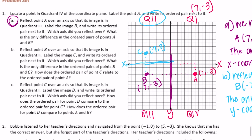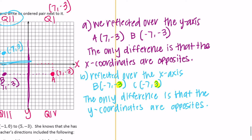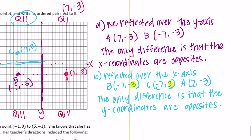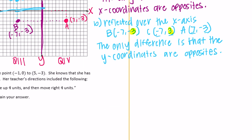The last question asks: how does the ordered pair of point C relate to the ordered pair of point A? A was (7, -3) and C is (-7, 3). Both coordinates are opposites — the x-coordinate goes from 7 to -7, and the y-coordinate goes from -3 to 3. So C and A have both x and y coordinates as opposites.